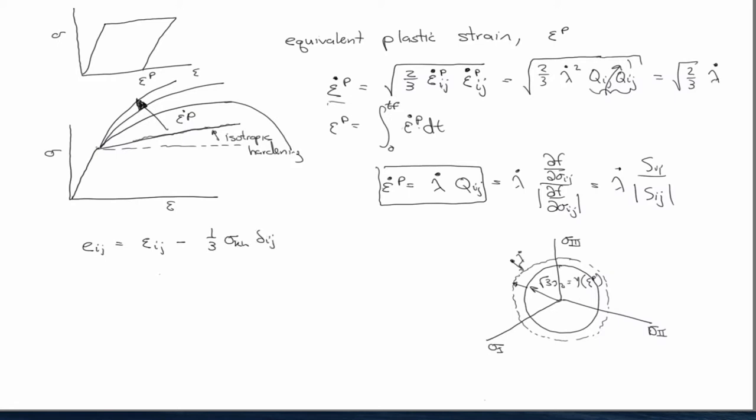So sigma ij minus one-third sigma kk delta ij, right? So this is just, remember, it's very much an analogy with the deviatoric stress. Deviatoric stress is this, I'm sorry, epsilon kk. So it's just an analogy with that. I mean, the deviatoric part of any tensor is this operation, right?